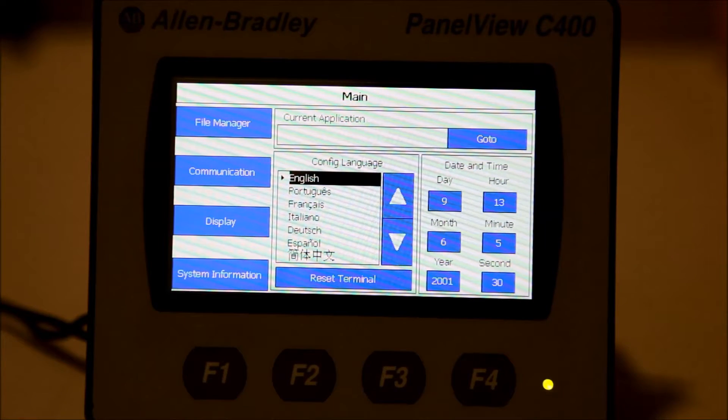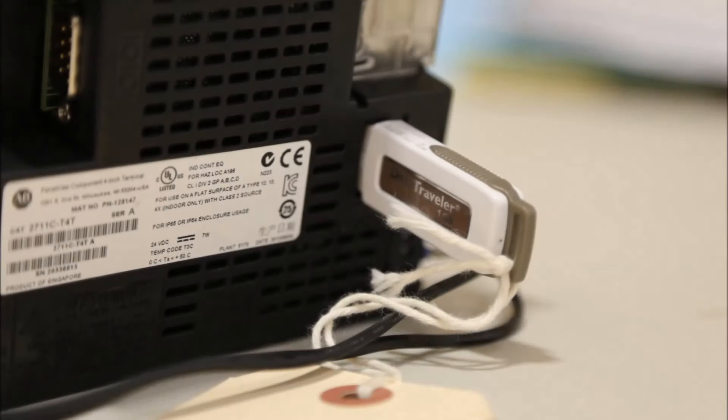First, power off the device. Plug the USB stick with the firmware update into the USB slot on the back of the panel.